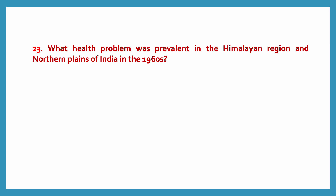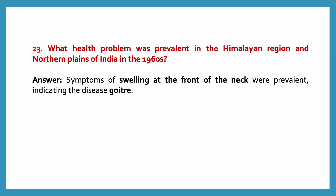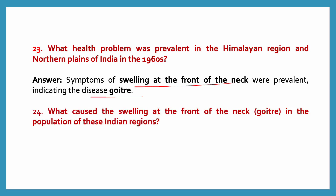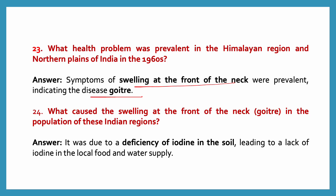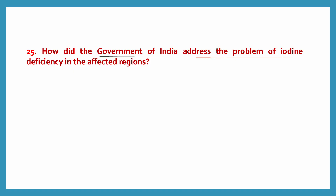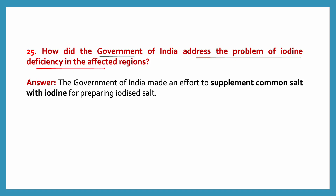What health problem was prevalent in the Himalayan region and northern plains of India in the 1960s? Swelling at the front of the neck was prevalent, indicating the disease goiter, caused by deficiency of iodine in the soil leading to a lack of iodine in the local food and water supply. The government of India made an effort to supplement common salt with iodine, preparing iodized salt.